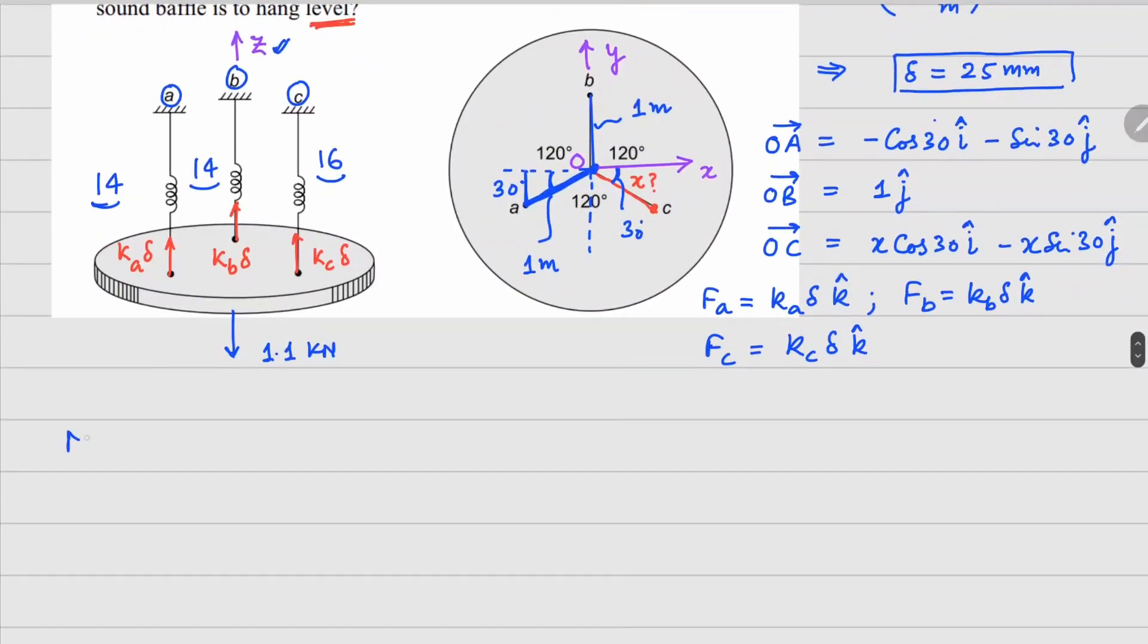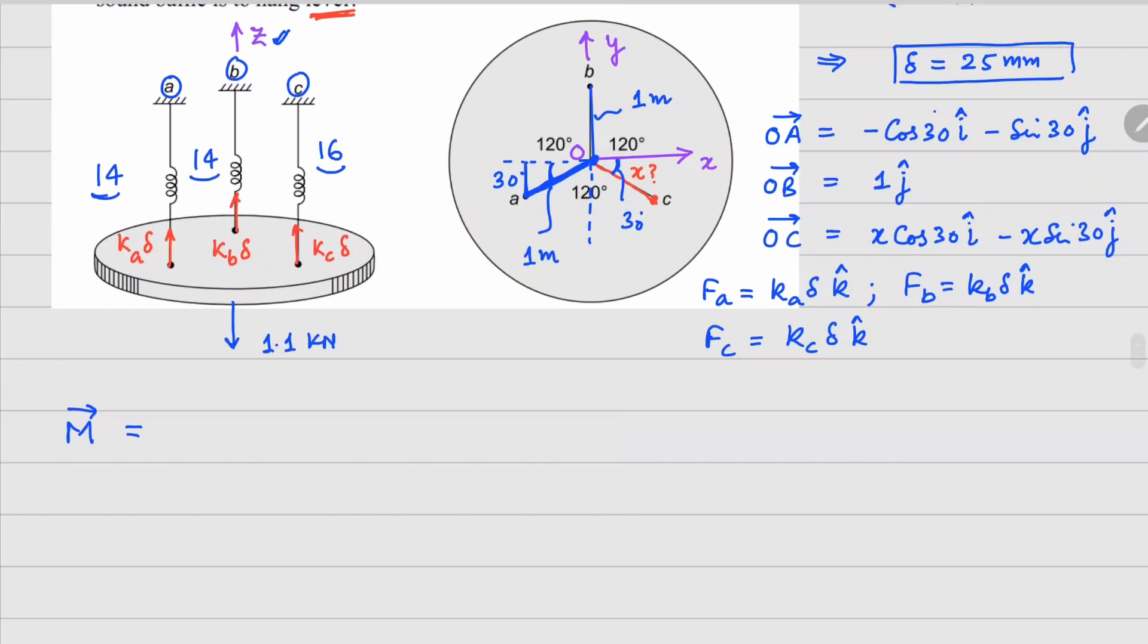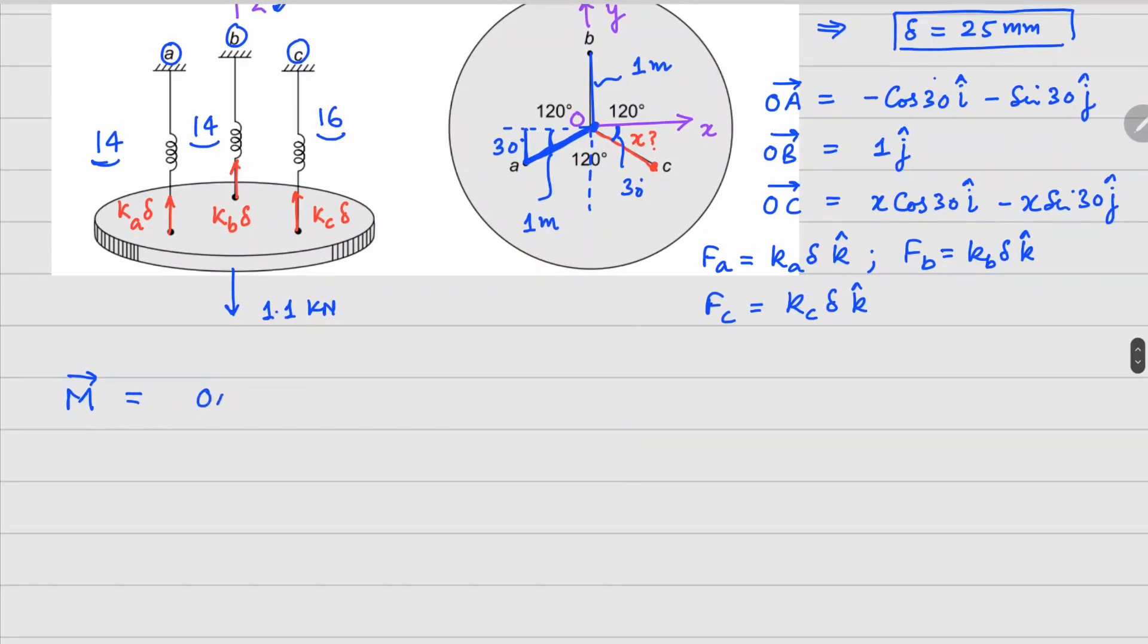Now we can find the total moment M, which is going to be r cross f. So meaning your OA vector crossed with FA plus OB cross FB plus OC cross FC. In this we need only two cross products: one is i cross k, which will be minus j, and the second one is j cross k, and that will be i cap.